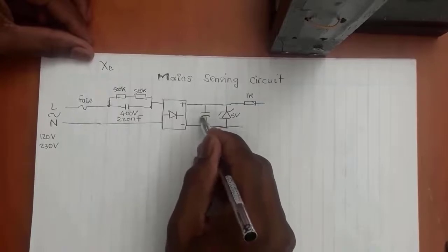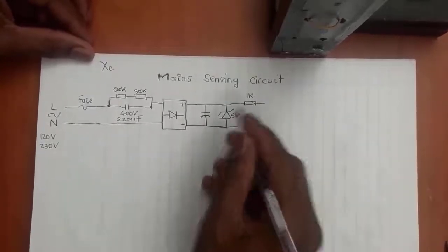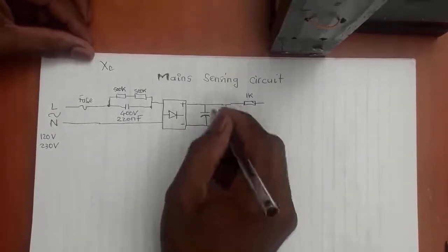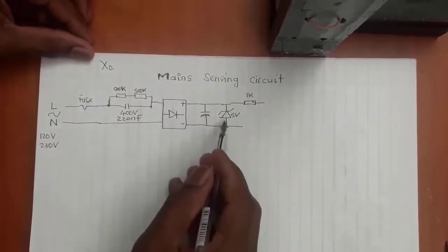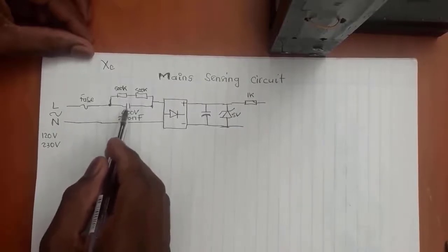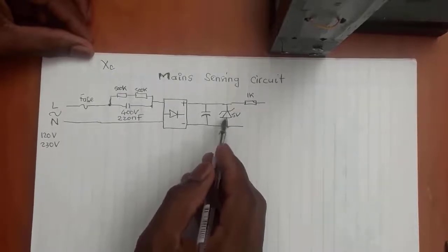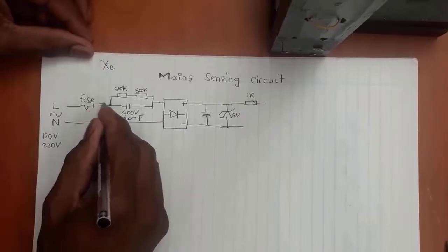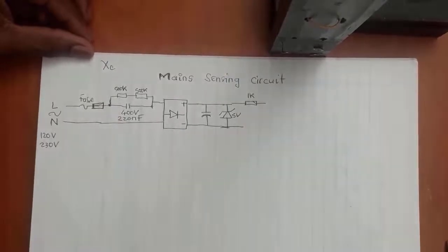The Zener diode might break if it's not rated higher. For design's sake, we can put a resistor, but I'm leaving it out here. The only current limiting is the XC - the capacitive reactance is limiting the current through the Zener. Otherwise, there is no protection for the inrush current. We can include a resistor here that can also limit the inrush current.